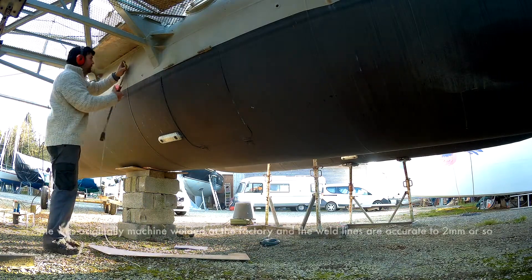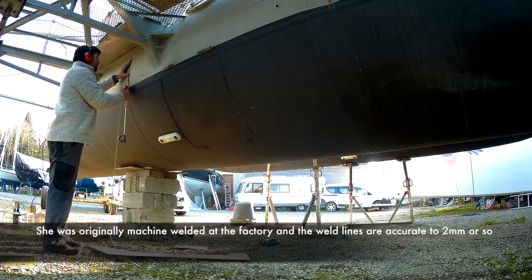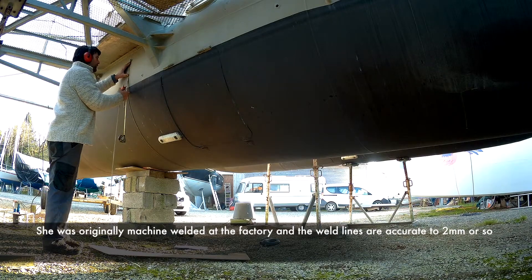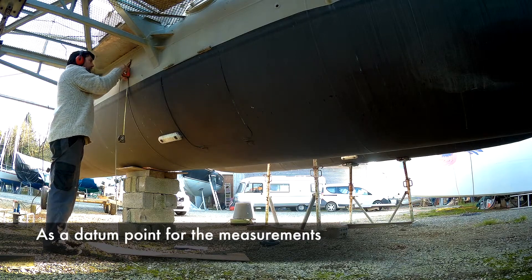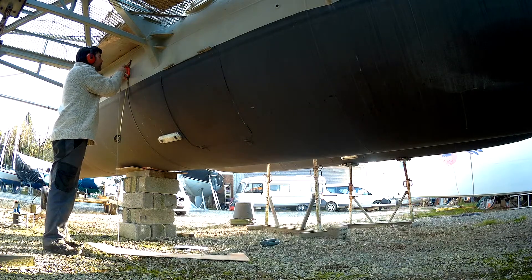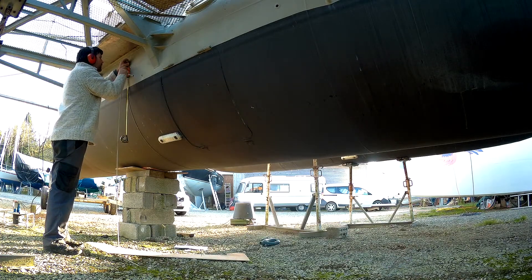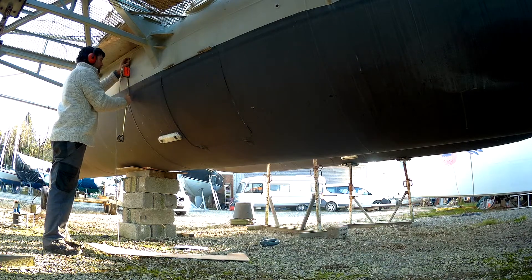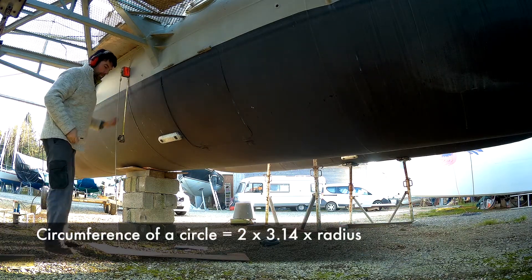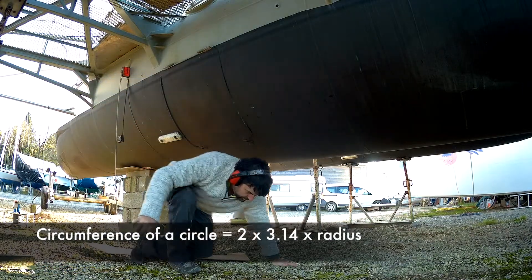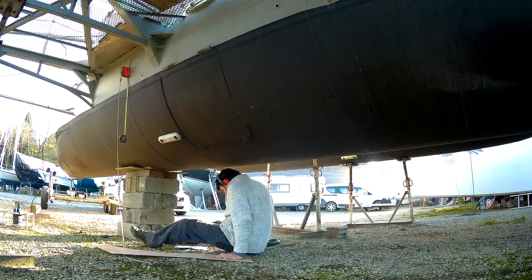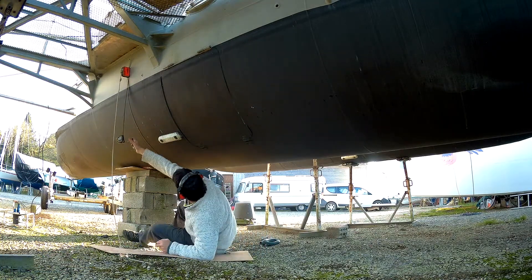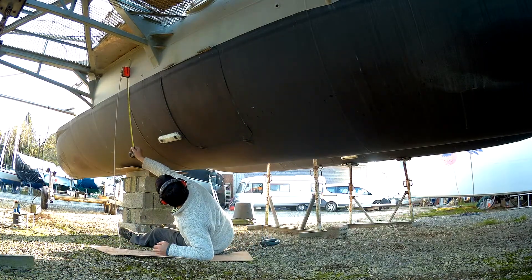So I'm using the weld lines on the main tube from when the tube was originally constructed as my datum points for the measurements. I've got these perfectly horizontal lines and they're accurate to about 2 millimeters. What I've done is I take the circumference of the tube, which is 2 pi r (2 times 3.14 times the radius), divide that by 4, and you should have the dimension from that weld line down to the center line of the bottom of the boat.